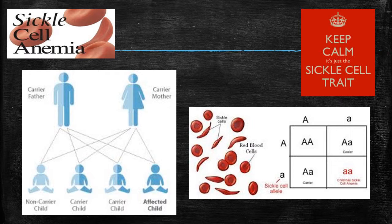Sickle cell is one of a group of diseases termed hemoglobinopathies, where normal hemoglobin is partly or completely replaced by the abnormal hemoglobin S, and sickle-cell shaped hemoglobin occurs. This causes the occlusion of small blood vessels, ischemia, and damage to affected organs. Sickle cell diseases include sickle cell anemia, sickle cell C disease, sickle cell hemoglobin E disease, and sickle cell thalassemia disease.